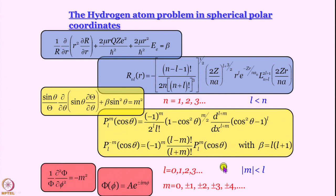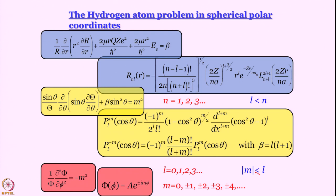From the theta-dependent part we got the secondary quantum number l = 0, 1, 2, 3, and so on. We have also seen why it is that |m| has to be less than or equal to L. That comes from the requirement of the z component of angular momentum never being greater than the total angular momentum.